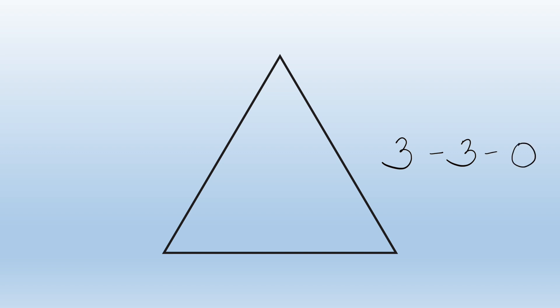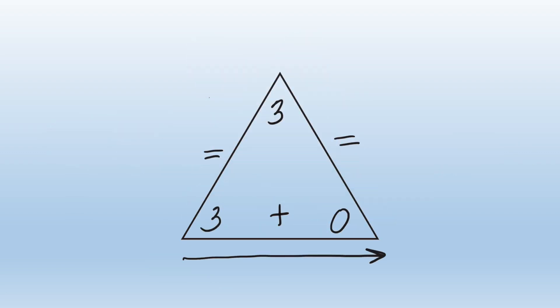He decided to do addition first. Start at the bottom, go over and up. Three plus zero equals three.